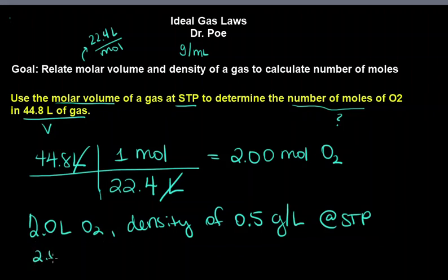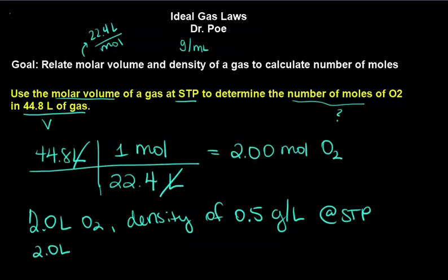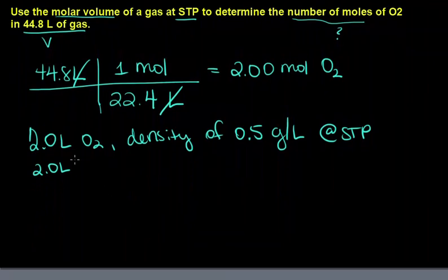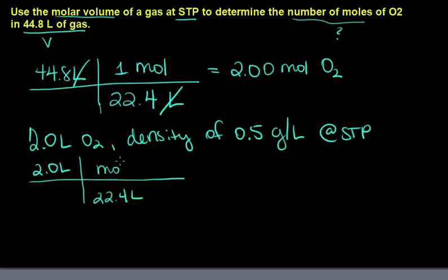What we could do is start with what you know, 2.0 liters. I'm going to scoot this down a smidge here, give a little bit more space. 2.0 liters. And we know STP would be 22.4 liters per mole.